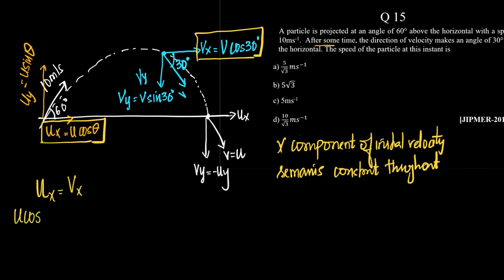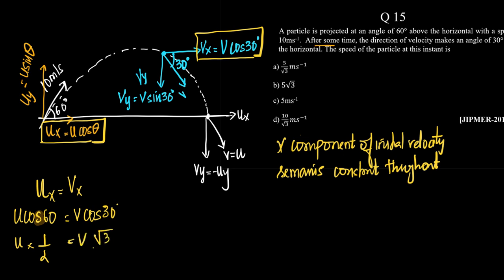What is ux? It is u cos — sorry, not 30, it is 60. So it is u cos 60. And vx is v cos 30. Now, what is the value of cos 60? It is 1 by 2. And what is the value of cos 30? It is root 3 by 2.